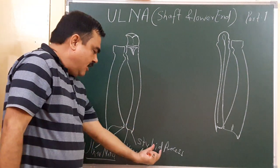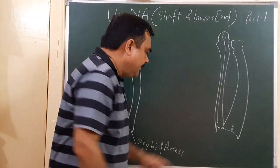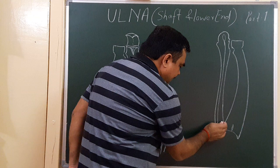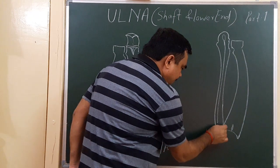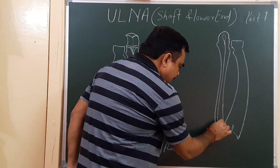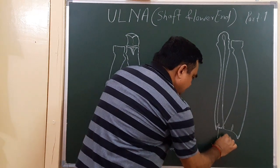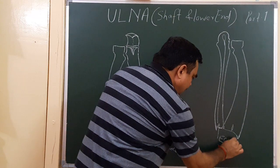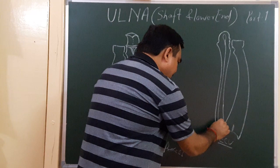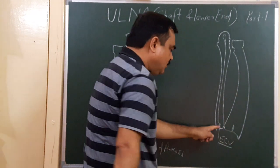In the lower end there is a styloid process and the head of the ulna. Posteriorly, there is a groove — this groove is for the extensor carpi ulnaris tendon. This is the posterior view.